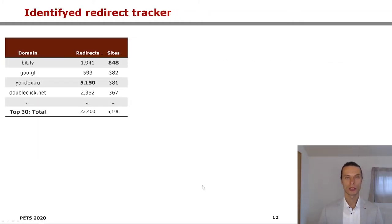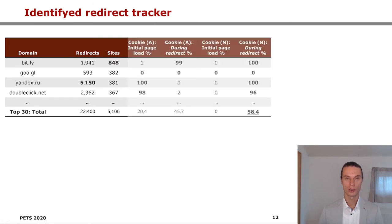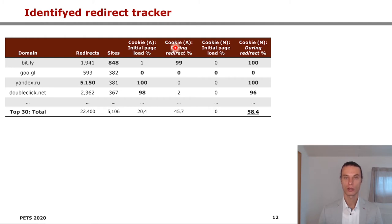Using our metrics, we built a table with the top 30 redirect trackers, the total number of redirects observed during the crawl, and the number of websites each tracker was embedded in and involved in the redirect chain. We then compared the two cookie settings — always versus never blocking third-party cookies — as well as comparing cookies being set in the initial page load versus during the redirect.